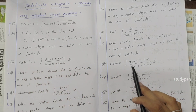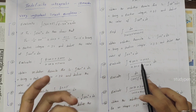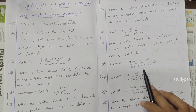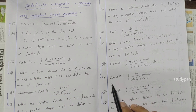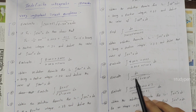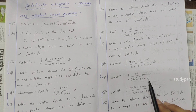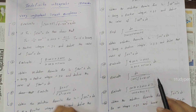Evaluate integral (9 cos x - sin x) / (4 sin x + 5 cos x) dx. Next: evaluate integral dx / (1 + x · sqrt(3 + 2x - x²)).